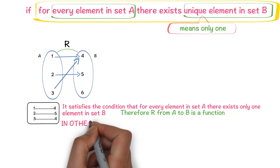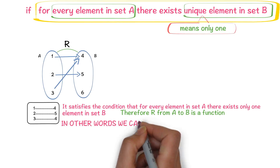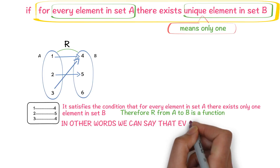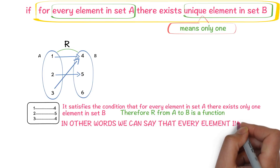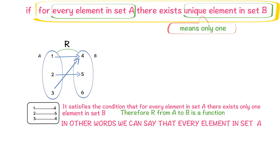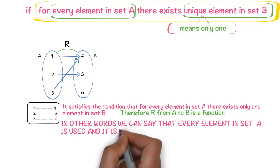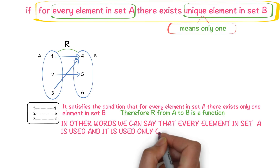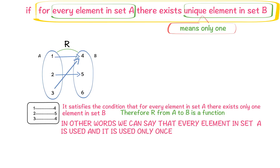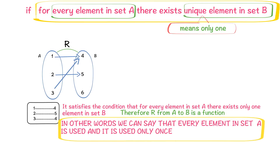In other words, we can observe it this way also: every element in set A is used and it is used only once. Because of that reason also we can say that R is a function from A to B.